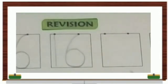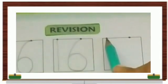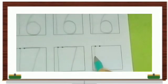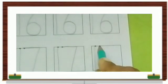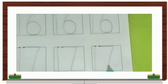Next number is number 19, 1, 9, 19. Next is 20, 2, 0, 20. Now we write again number 16, 1, 6, 16, 1, 7, 17.